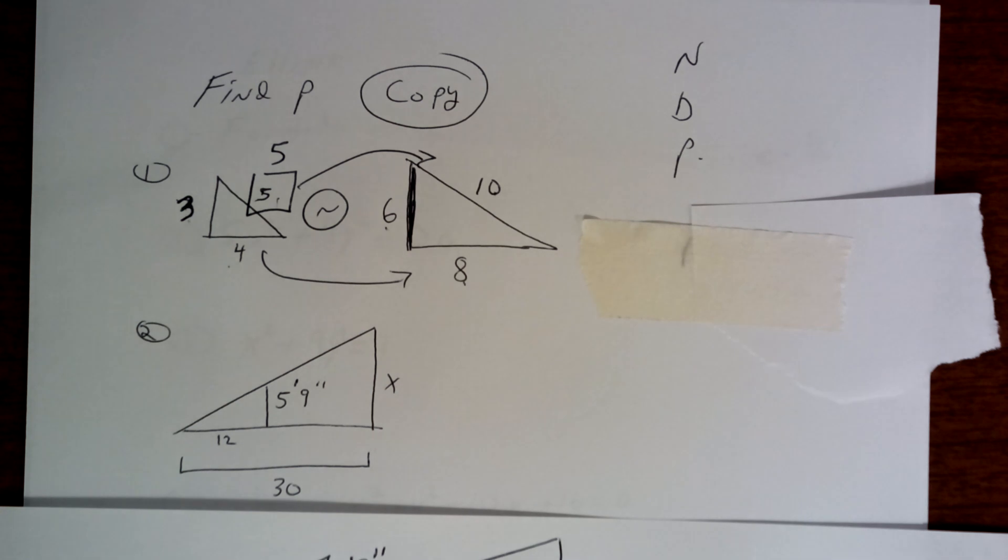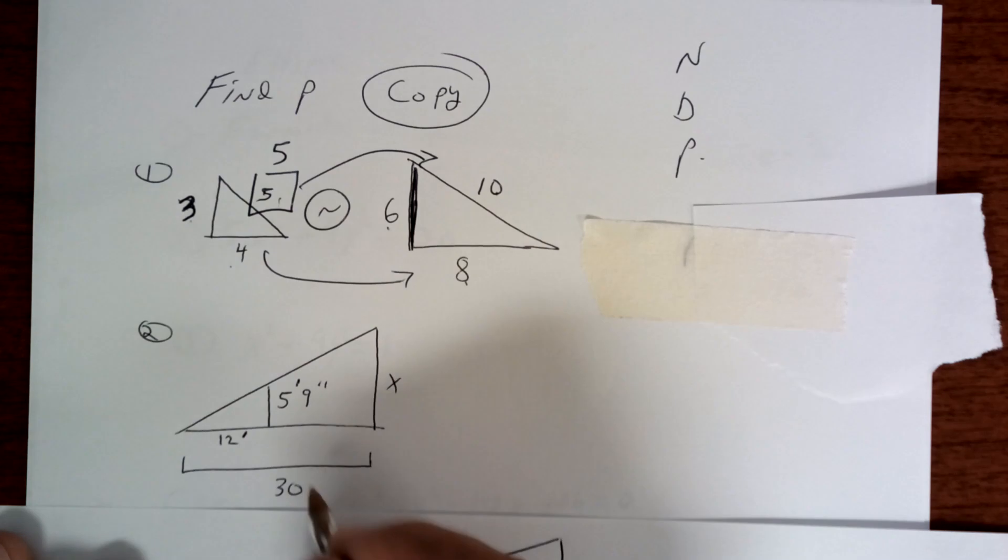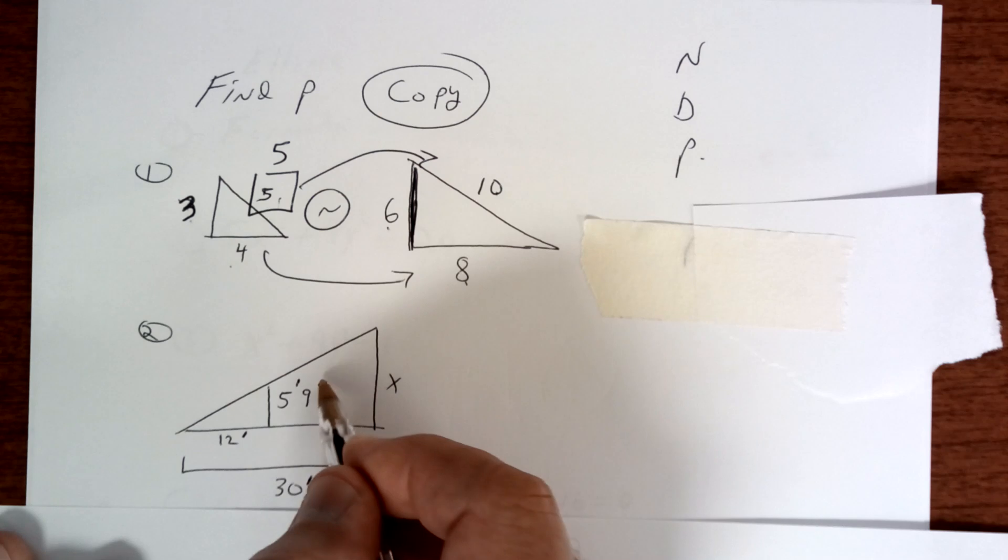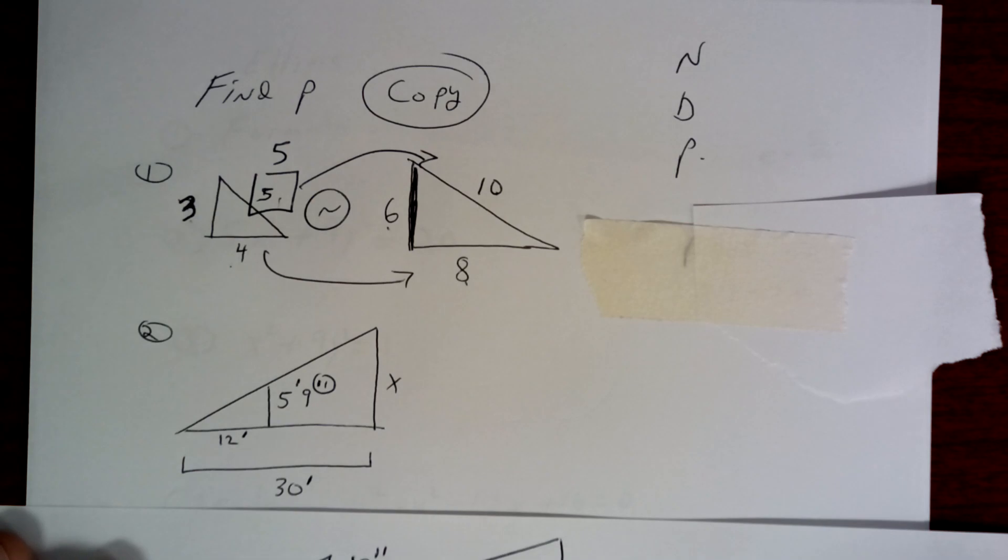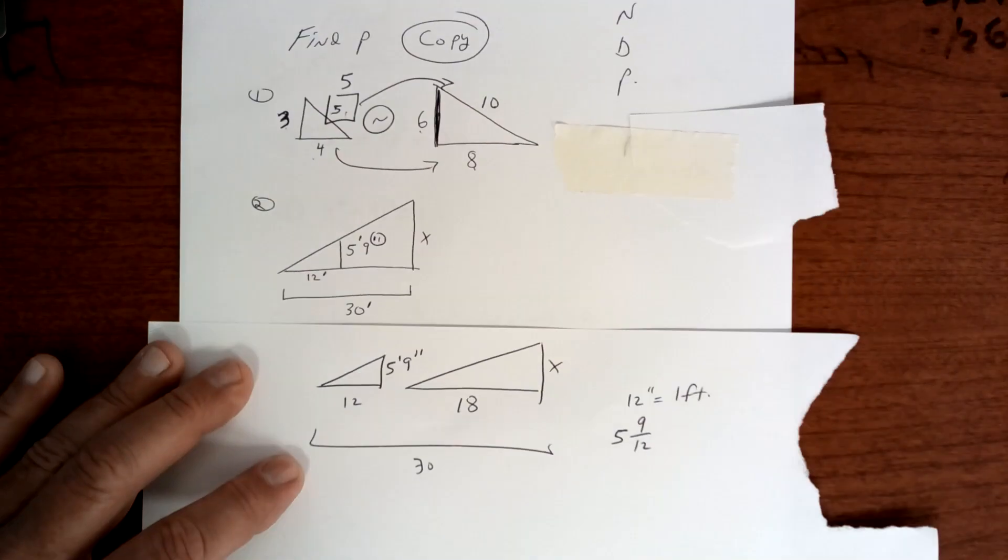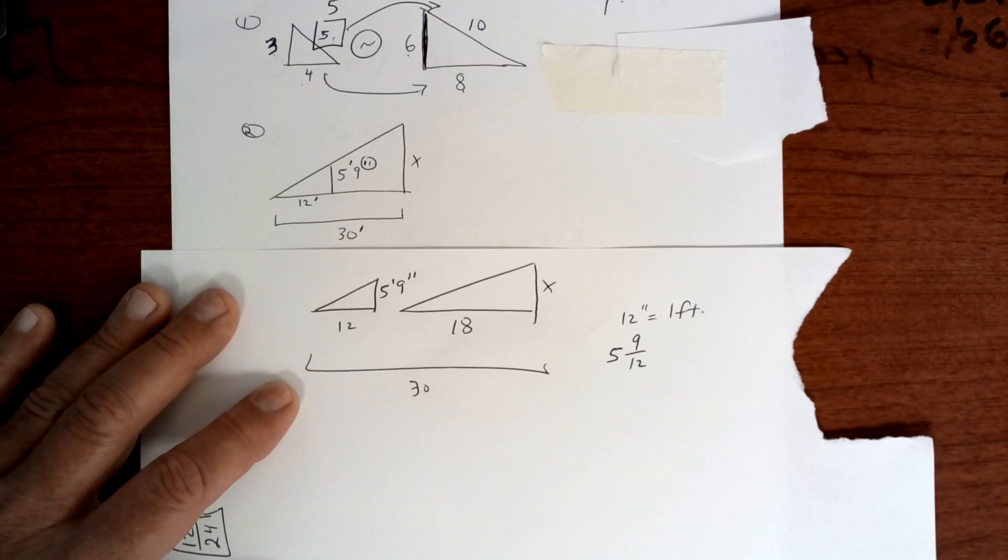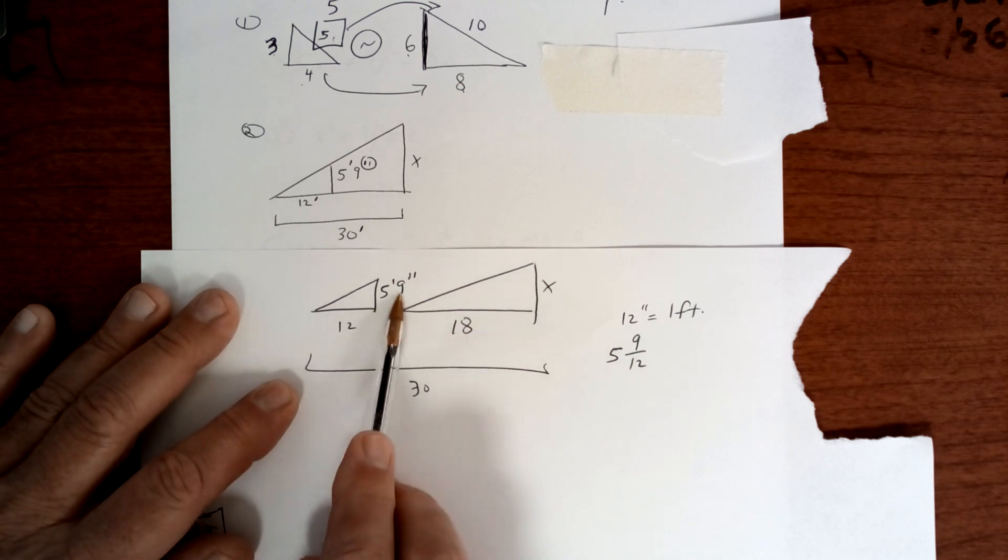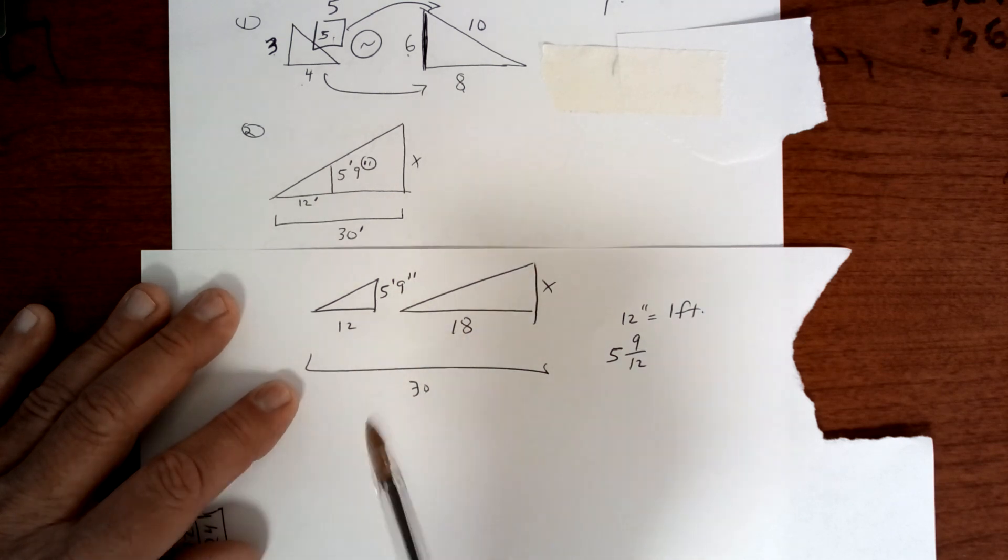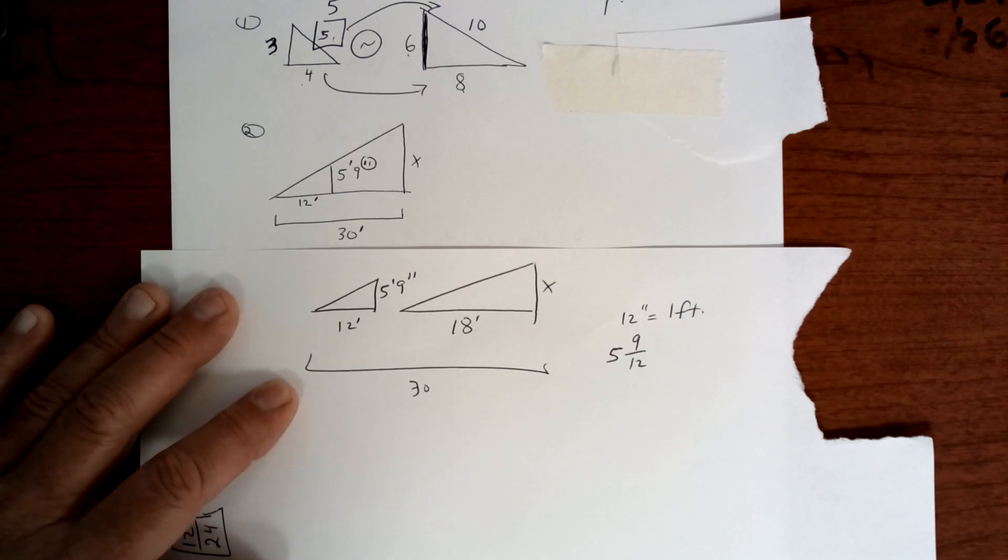Now here's the trick here, so pay attention. This one right here is actually in feet. And this one is in feet. But here's the problem. This one is in inches. So there are 12 inches equals 1 foot. So you've got to convert that. So you have to say 5 and 9 out of 12 inches.